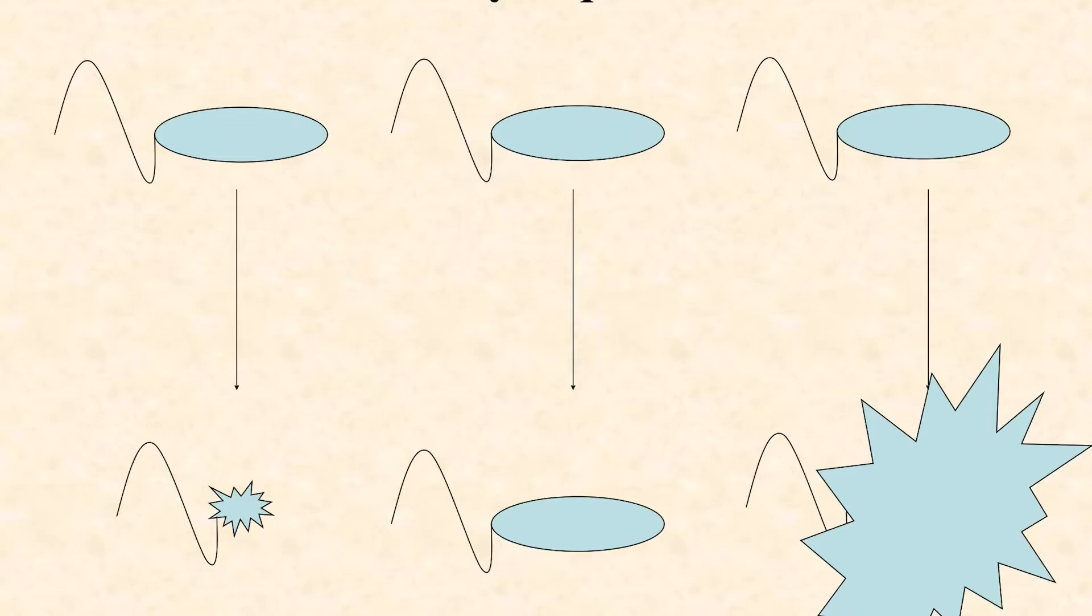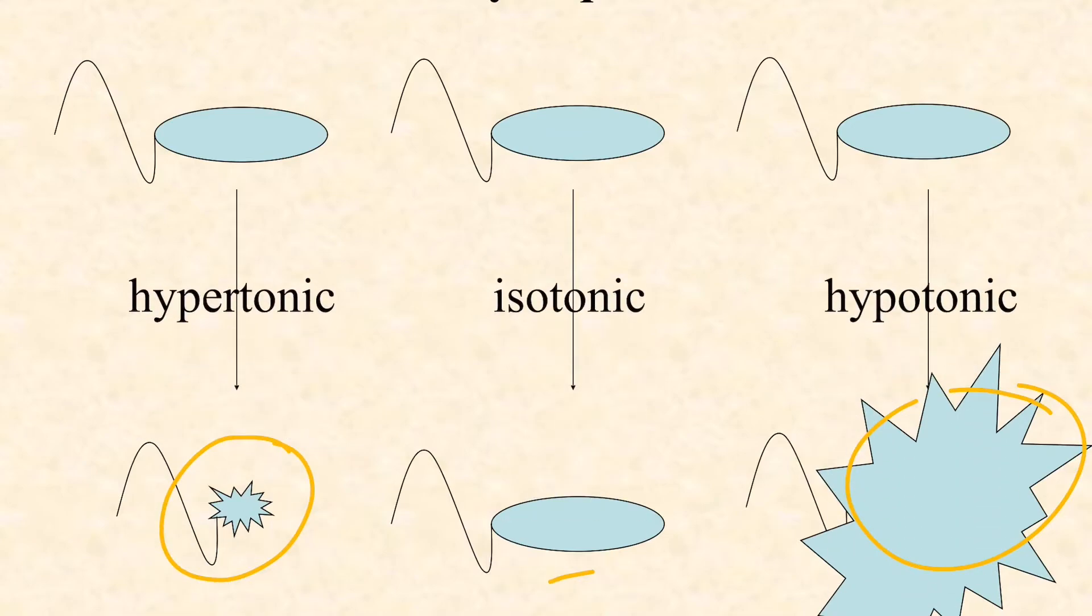Take a minute, pause this, and write the words hypertonic, isotonic, and hypotonic for each of the solutions as you think the cell would respond, either by crenating, collapsing in on itself, remaining the same, or lysing, swelling to the point of potential lysis.